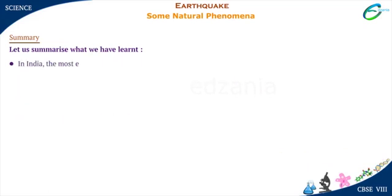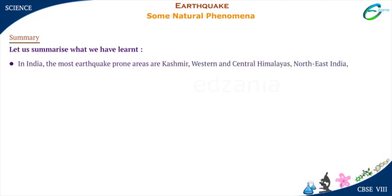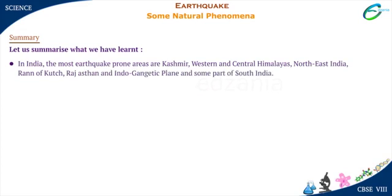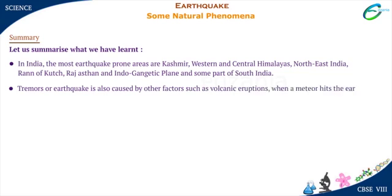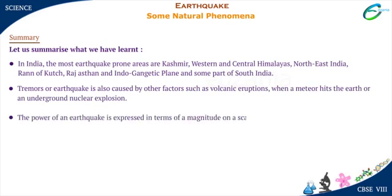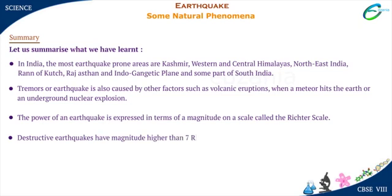In India, the most earthquake-prone areas are Kashmir, Western and Central Himalayas, Northeast India, Rann of Kutch, Rajasthan, the Indo-Gangetic Plain, and some parts of South India. Tremors are also caused by volcanic eruptions, a meteor hitting the earth, or an underground nuclear explosion. The power of an earthquake is expressed in terms of magnitude on the Richter Scale, with destructive earthquakes having a magnitude higher than 7.